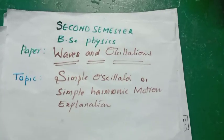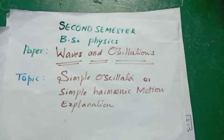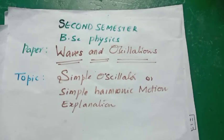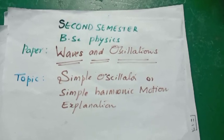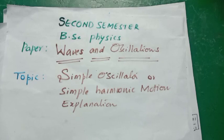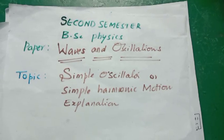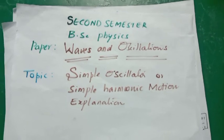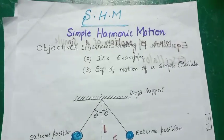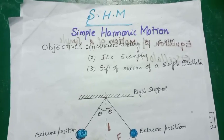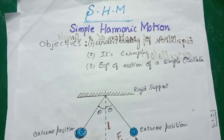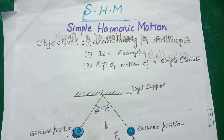Good morning students. Today I am going to explain simple harmonic motion, which is in second semester B.Sc. Physics waves and oscillations. This is a very important question in the semester examination. The examiner will ask you to define simple harmonic motion, obtain its differential equation, and also its solution. After completion of this topic, you will understand simple harmonic motion, know the examples, and how to derive the equation of motion of a simple harmonic oscillator.